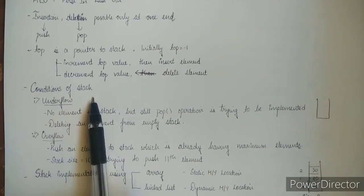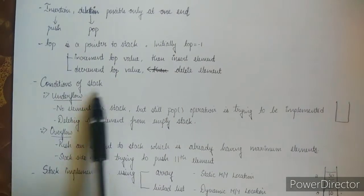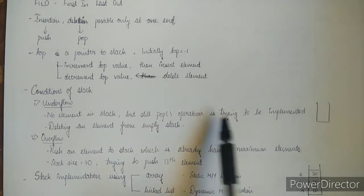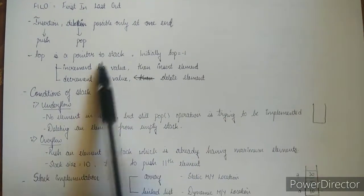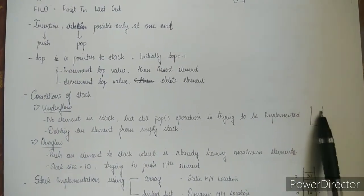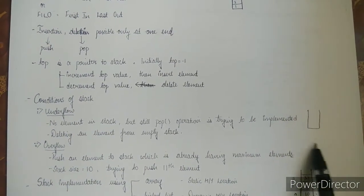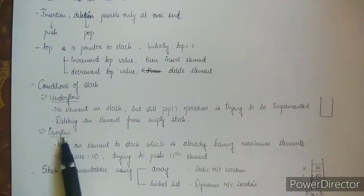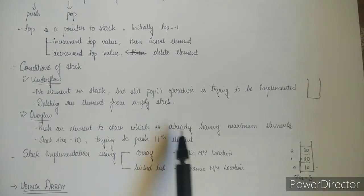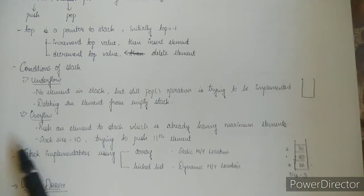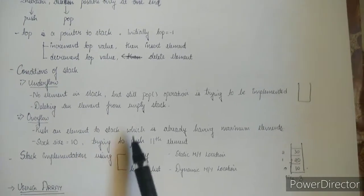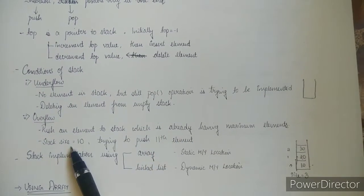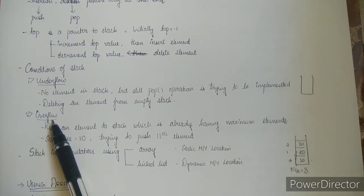Now let's look at the conditions of a stack. There are two extreme conditions: underflow and overflow. Underflow occurs when the stack is empty but a pop operation is still being attempted — you cannot delete any element from an empty stack. Overflow occurs when you try to push an element into a stack that already has the maximum number of elements. For example, if the stack size is 10 and you try to push an 11th element, that is overflow.